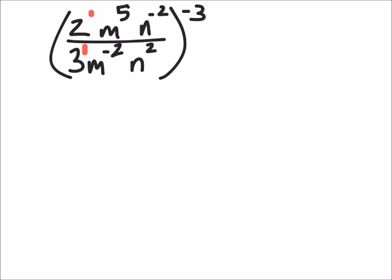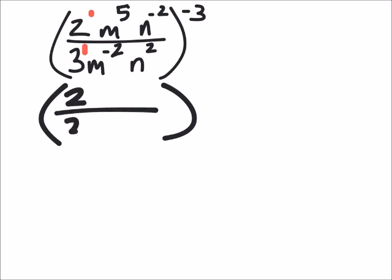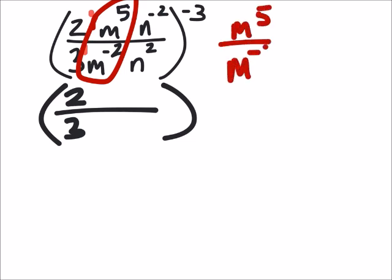But I'm doing the inside of the parentheses, so what this means is that the 2 and the 3 can simplify. But if I look at the m's right here, I've got m to the power of 5 over m to the power of negative 2, which is the same as m to the power of 5 minus negative 2.